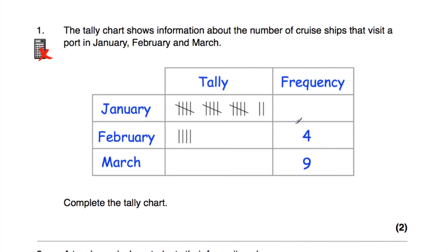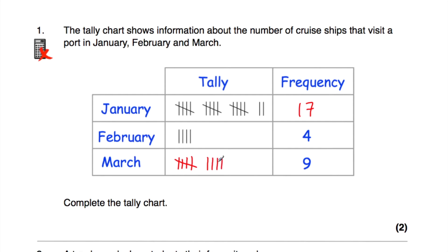Let's start off with the frequency for January. Counting the tally marks: 5, 10, 15, 16, 17. So the total frequency for January is 17 — that means 17 cruise ships visited the port in January. For March, we need to complete the tally for nine. That's a group of five and then another four, so five plus four is equal to nine. And that's it — we've completed the tally chart.